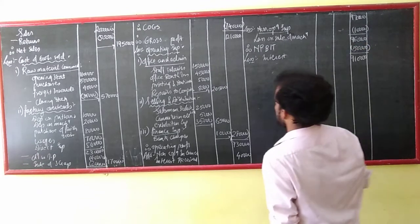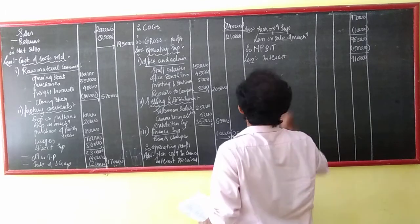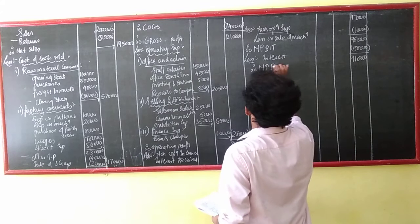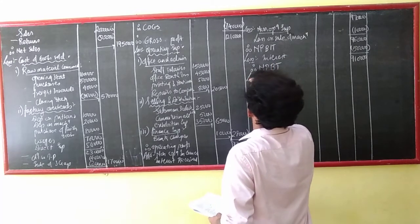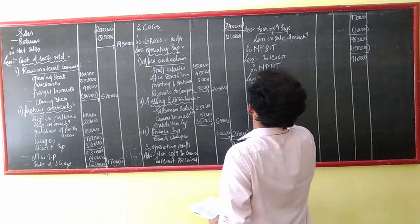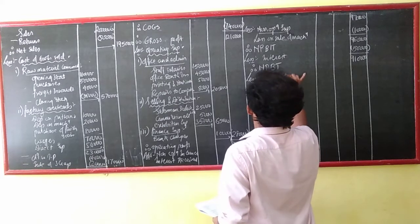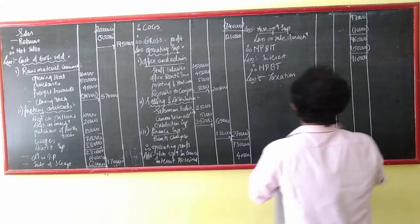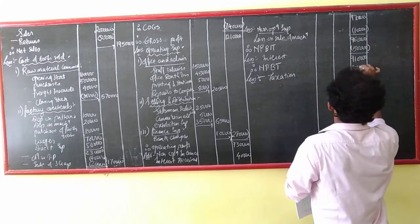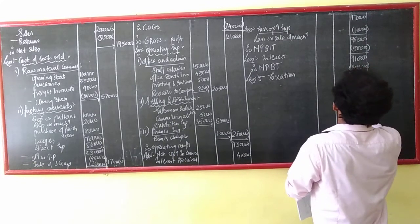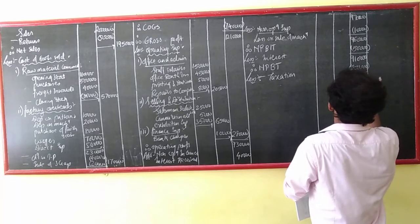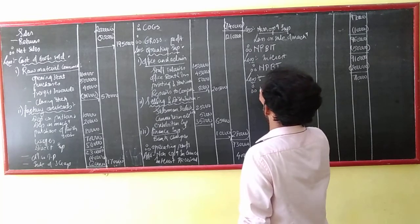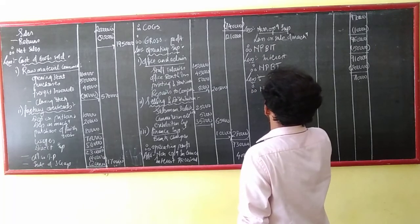So NPBT — Net Profit Before Tax. Now this is before tax, so taxation: 2 lakhs. Therefore NPAT (Net Profit After Tax) is obtained after deducting taxation of 2 lakhs.